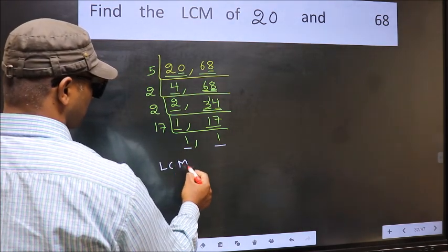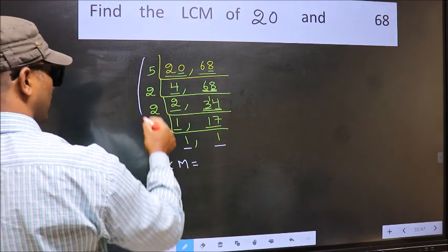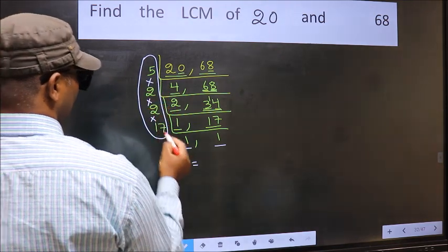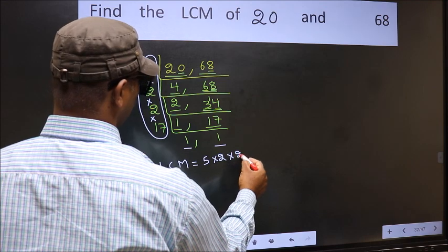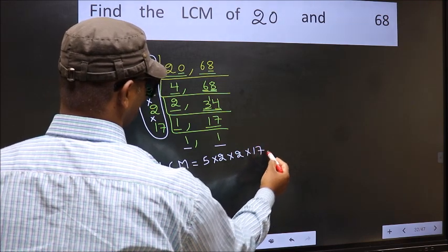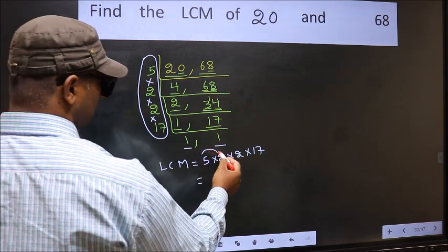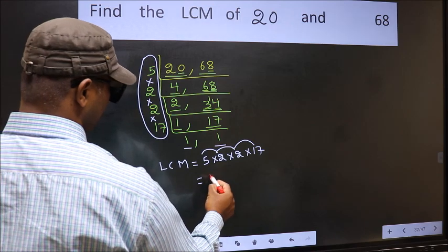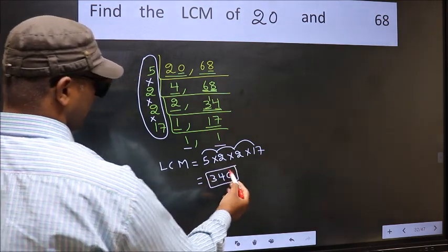So our LCM is, LCM is the product of these numbers. That is 5 into 2 into 2 into 17. So let us multiply these numbers. 5 into 2, 10 into 2, 20 into 17. 340 is our LCM.